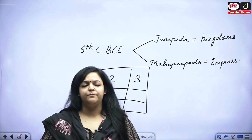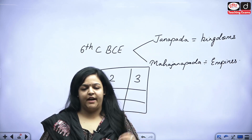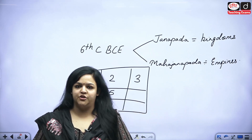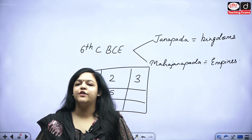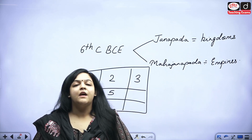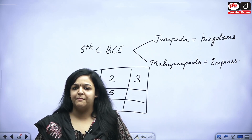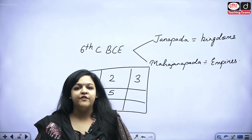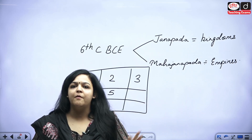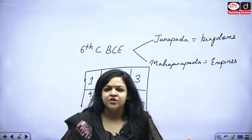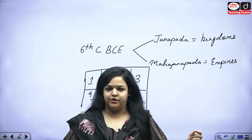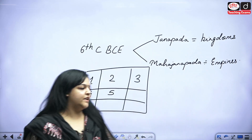If you refer to Buddhist texts, Sanskritic texts, or Brahmanical sources, you will know that there are sixteen important Mahajanpads. We are going to learn about their capitals, features, and present-day locations, because it is very important from an exam perspective. Previous year question papers have asked questions about their features, capitals, and present-day locations — you get at least one question every year.